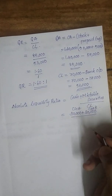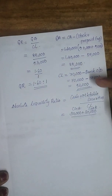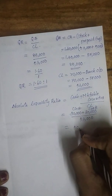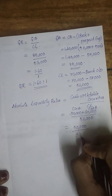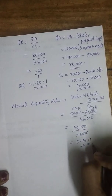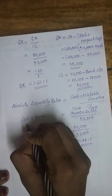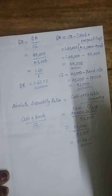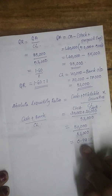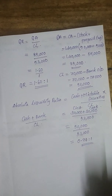For the absolute liquidity ratio, we take cash plus bank divided by current liabilities. Marketable securities are not applicable here. The result is approximately 0.94:1. The ideal ratio for absolute liquidity is 0.75:1, so 0.94 is above the idle ratio.